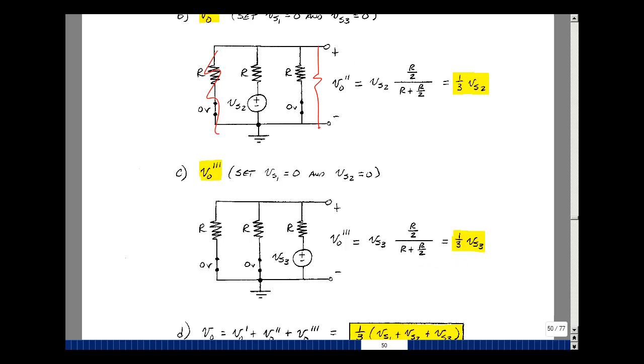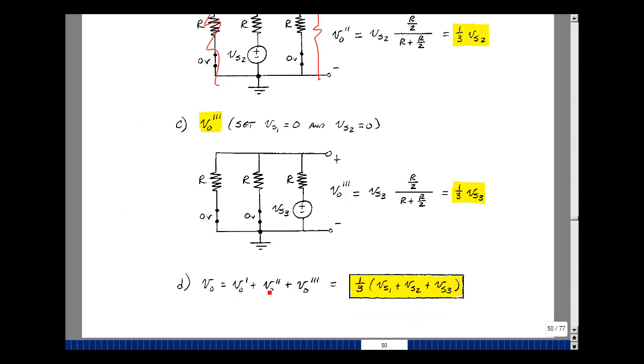Now we can add the results together. First result, second result, and third result. We have a common 1 third, and what we get then is the sum of the three inputs divided by three. So if these are three microphones, we're basically giving the same weight to each microphone and then creating an output that's 1 third of their sum. This is how you can use superposition to solve problems with multiple sources.